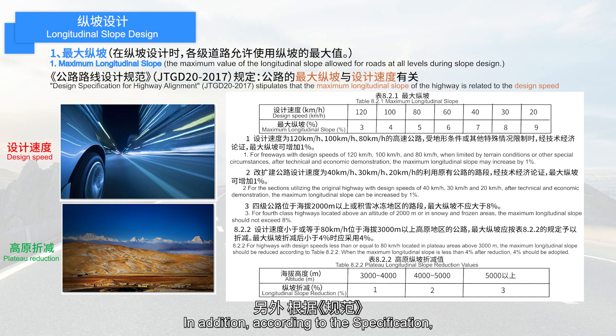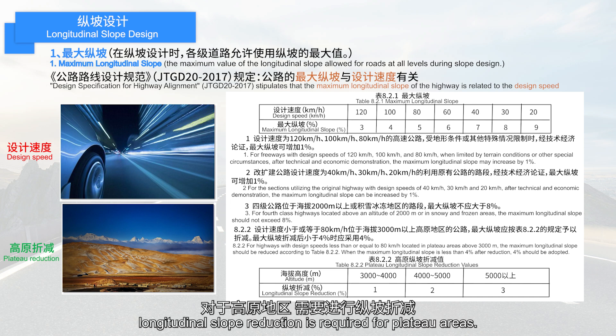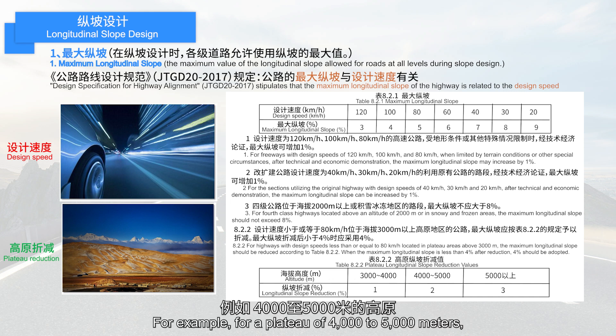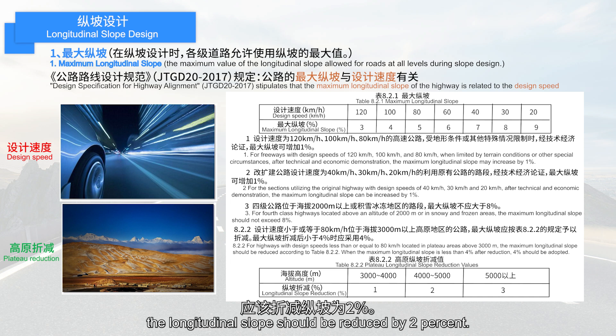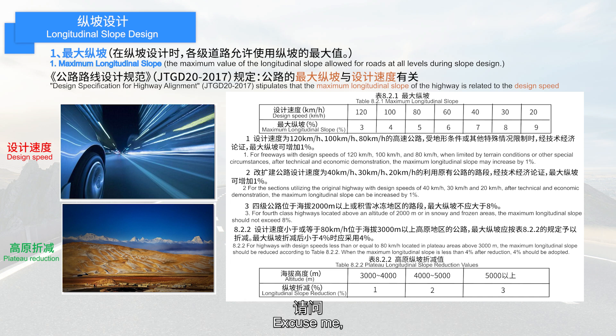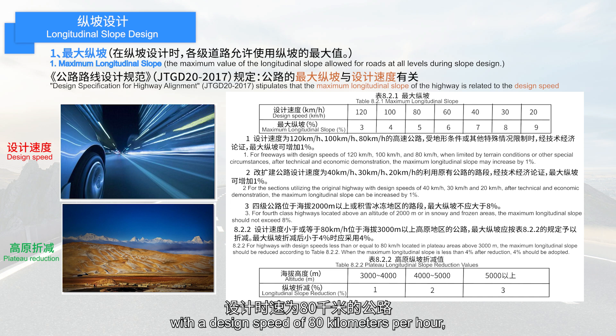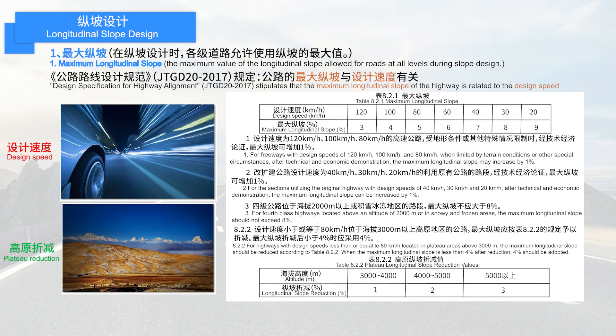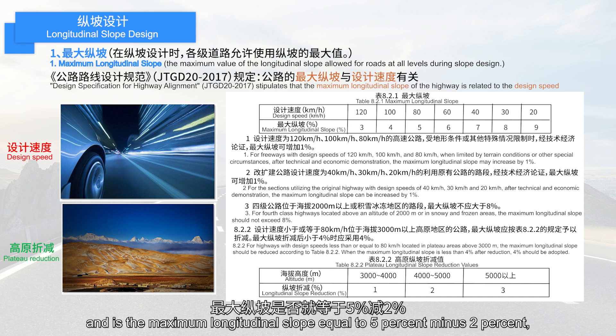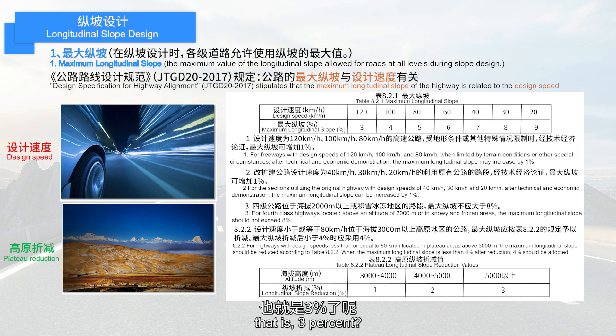In addition, according to the specification, longitudinal slope reduction is required for plateau areas. For example, for a plateau of 4,000 to 5,000 meters, the longitudinal slope should be reduced by 2%. A highway is on the 4,500-meter plateau with a design speed of 80 kilometers per hour. Is the maximum longitudinal slope equal to 5% minus 2%, that is, 3%?